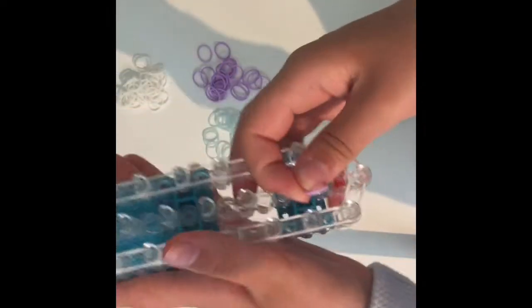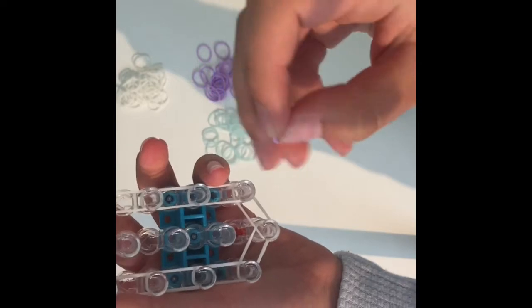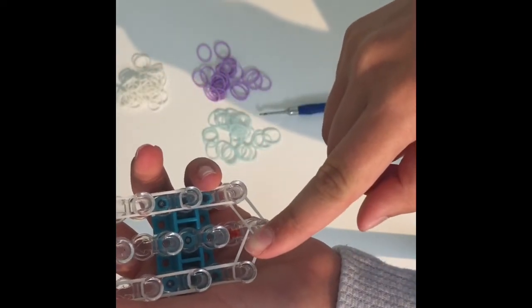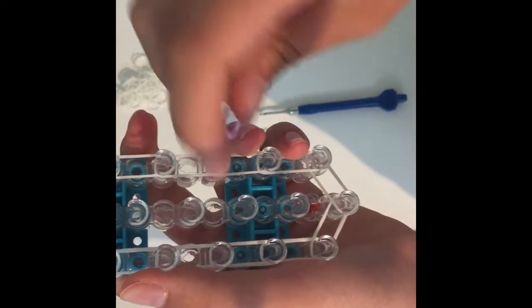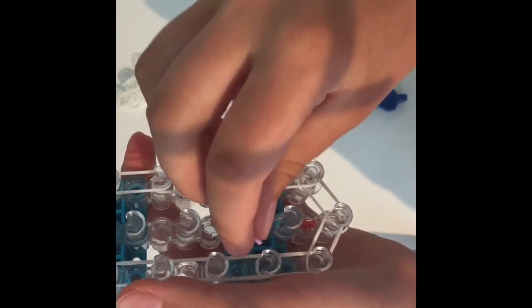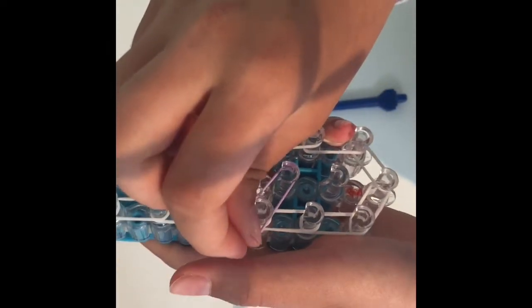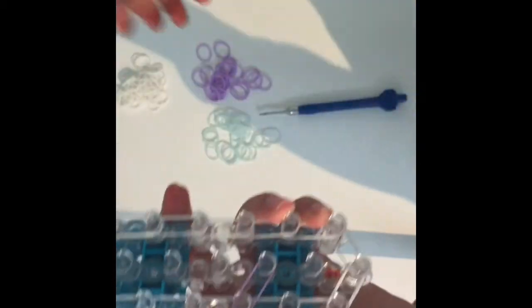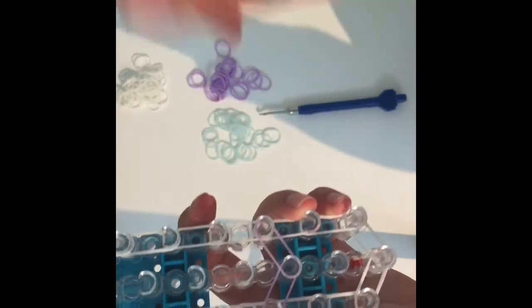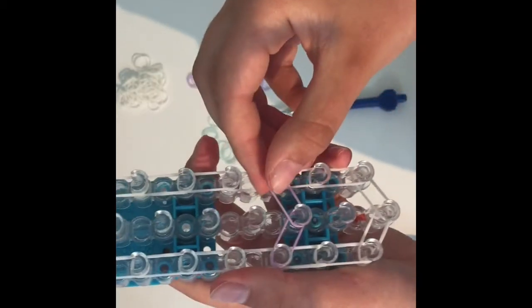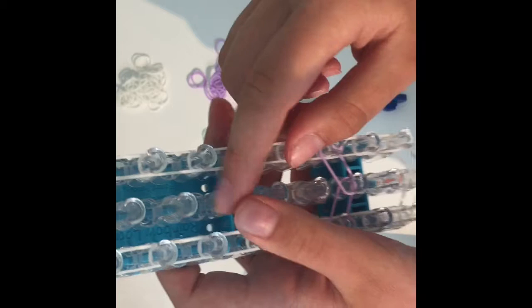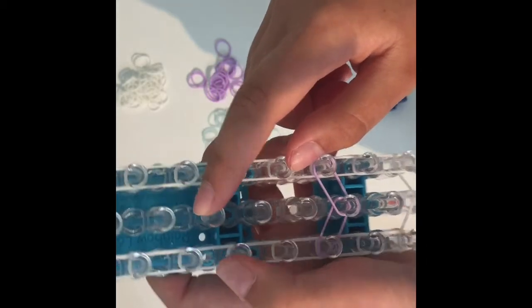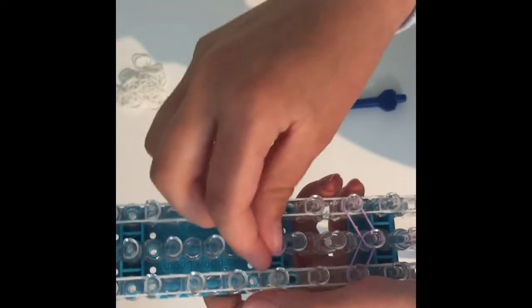I'm going to use purple for my petals and then what you're going to do is go from this peg here to the left and then to the right. Then you're going to skip these two pegs and you're going to be on the third peg up from that and do the same thing.